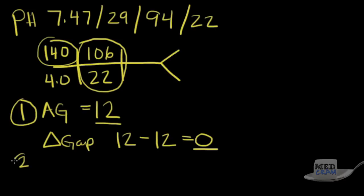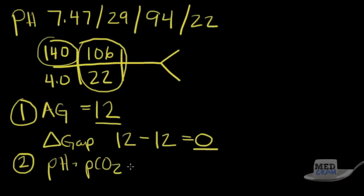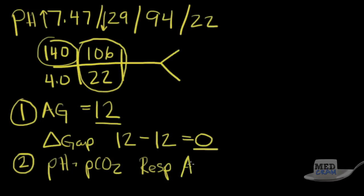Step 2: we look at the pH and the PCO2. If they're going in the same direction, it's a metabolic process; if they're going in different directions, it's a respiratory process. Here the pH is going up from 7.40 and the PCO2 is going down from 40 — they're going in different directions. Therefore this must be a respiratory problem, specifically a respiratory alkalosis since the pH is greater than 7.45.